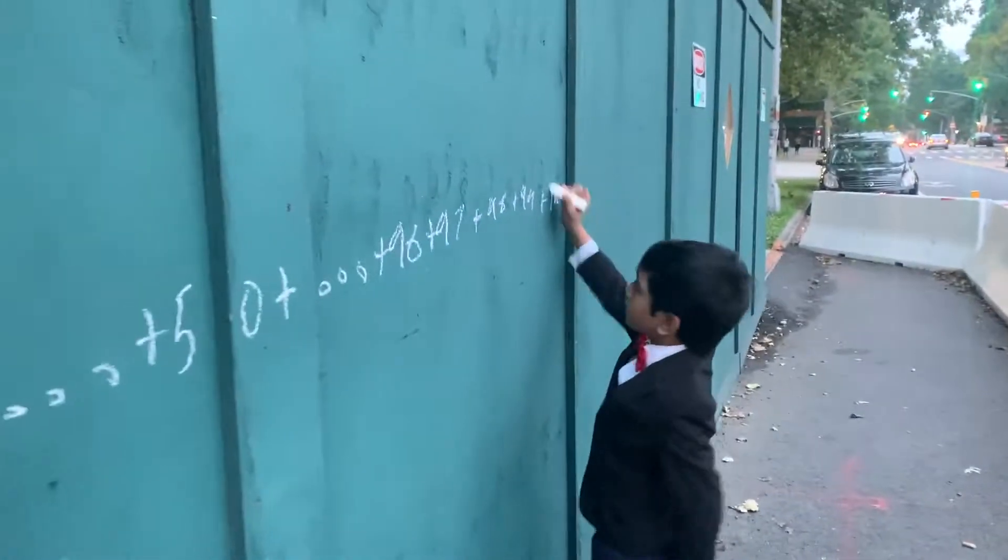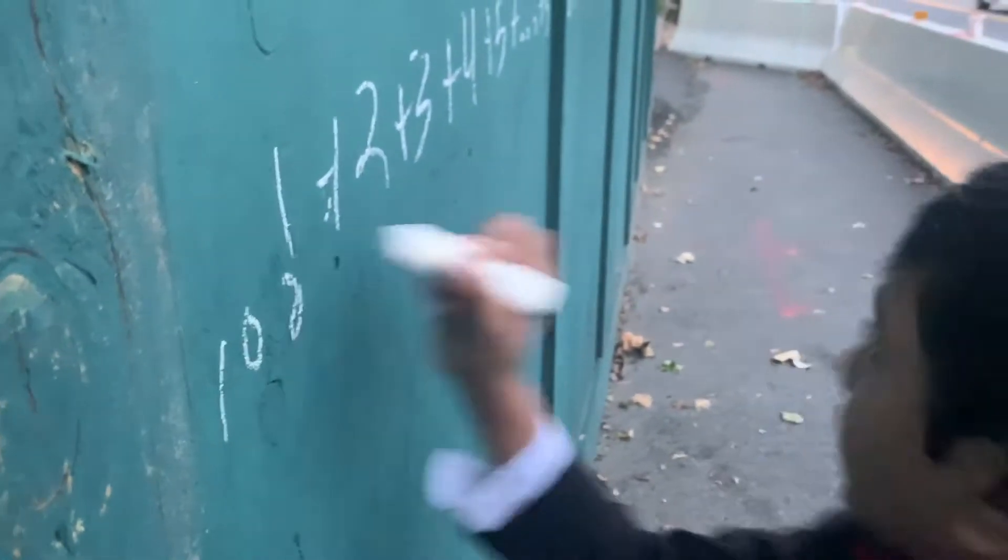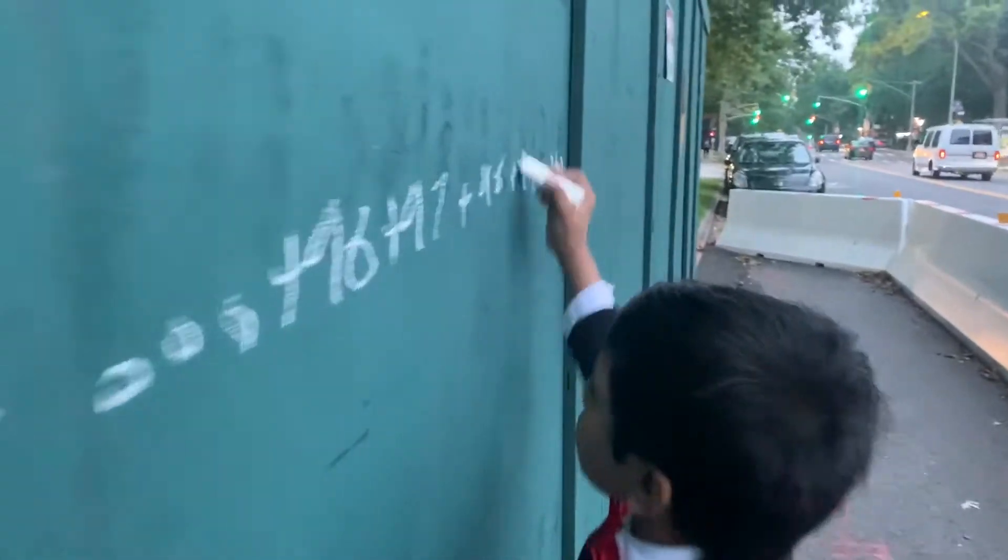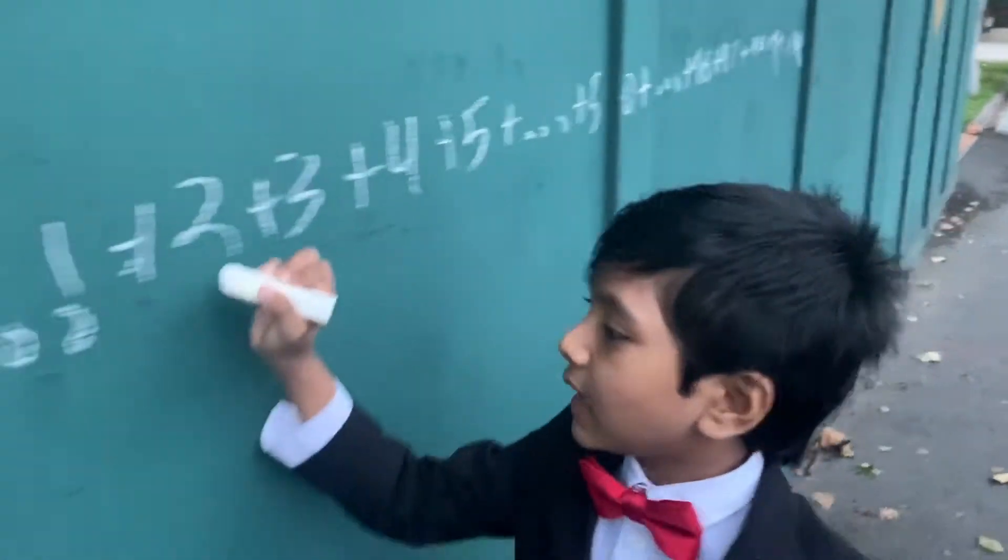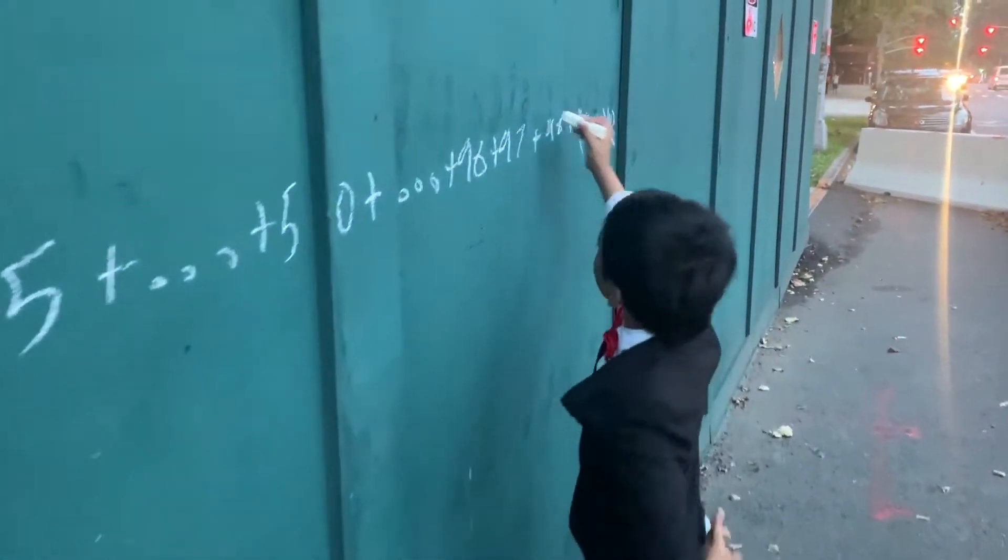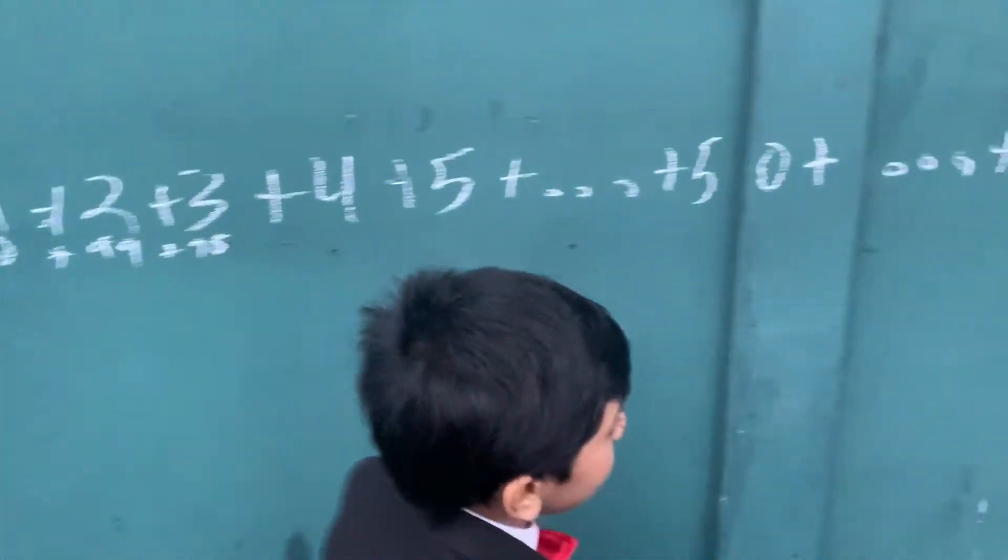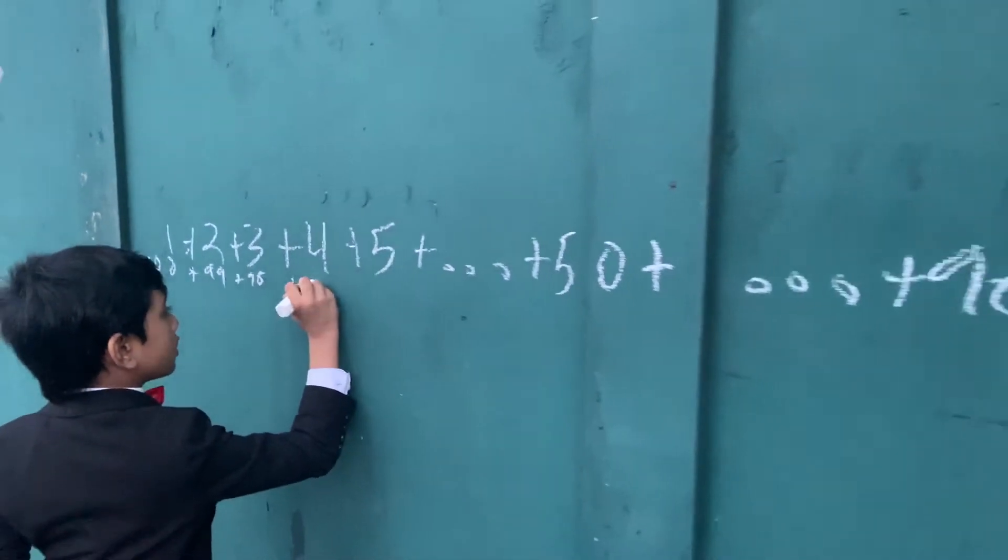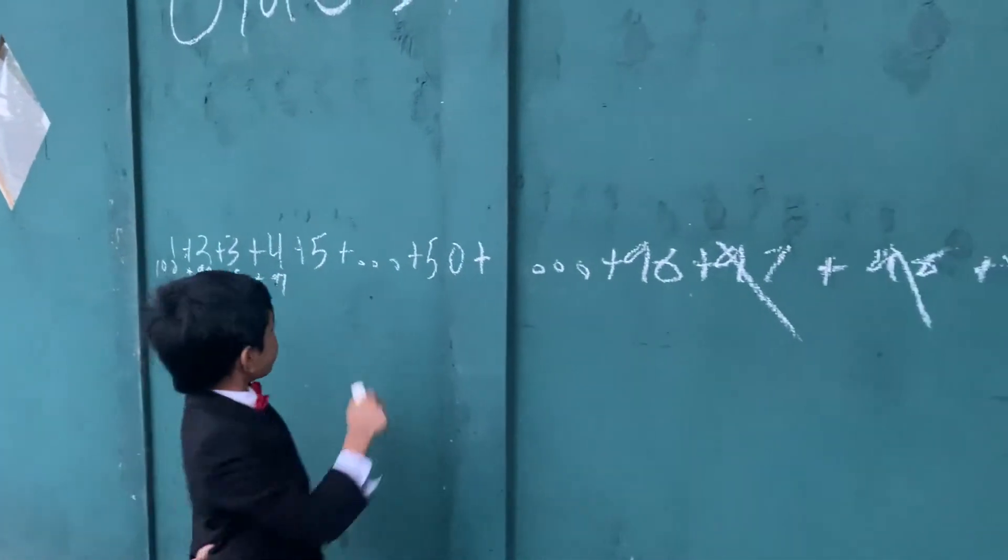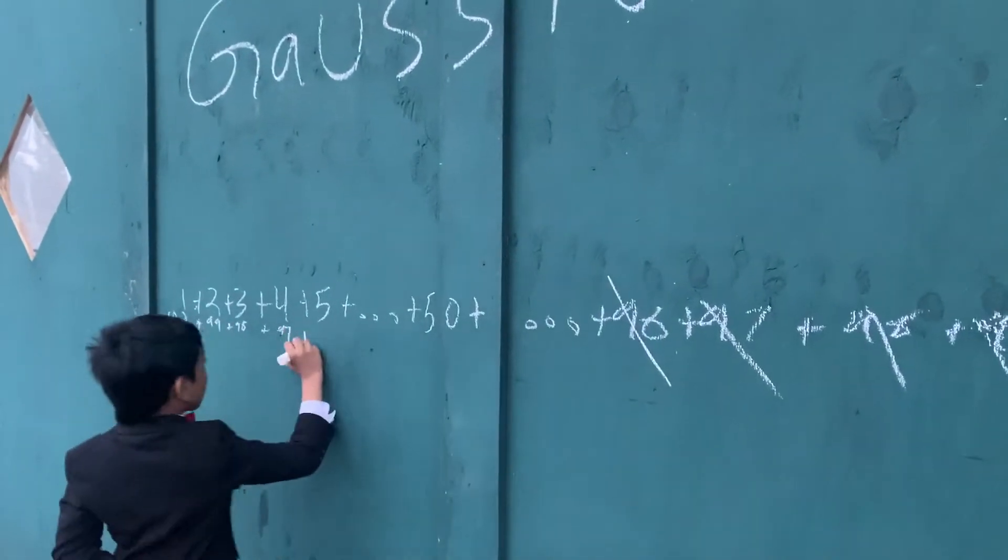This seems like a baffling mathematics problem. What we can do is pair up the first number with the last number, then we can pair the second to last number with the second number, and then pair the third to last number with the third number, and then pair the fourth to last number with the fourth number, the 4 plus 97, and the fifth to last number with the fifth number, so 5 plus 96.